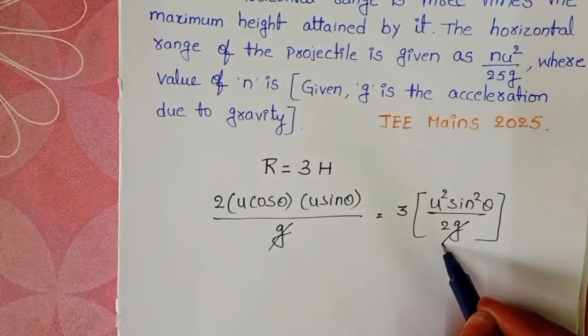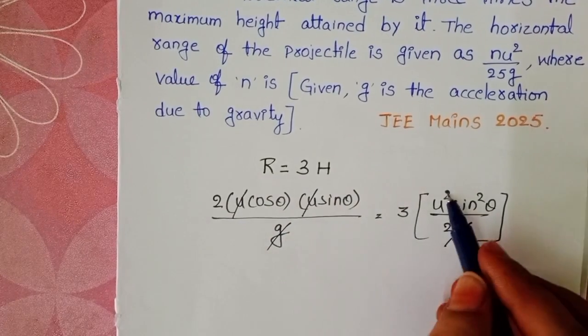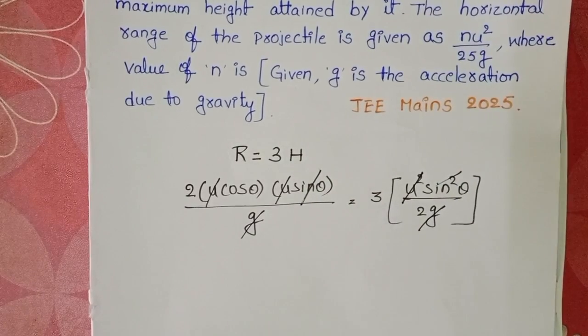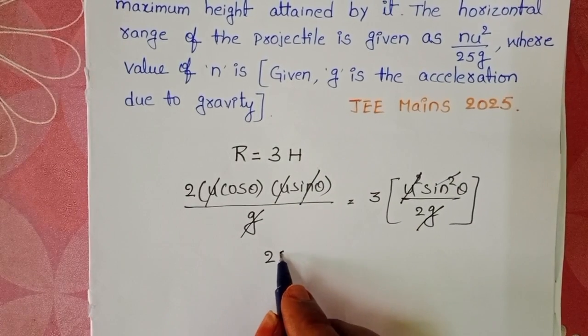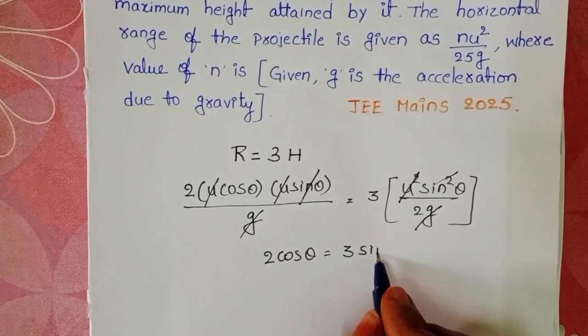g gets cancelled on both sides. u into u is u². So u² also cancels on both sides. And here, one sinθ also gets cancelled. 2cosθ equals 3sinθ/2.